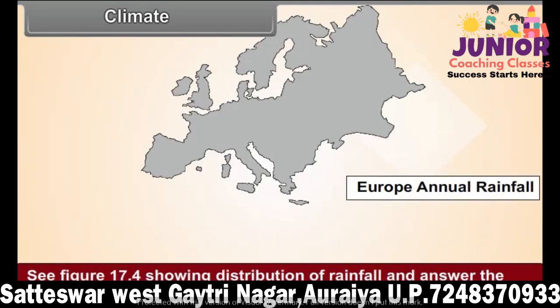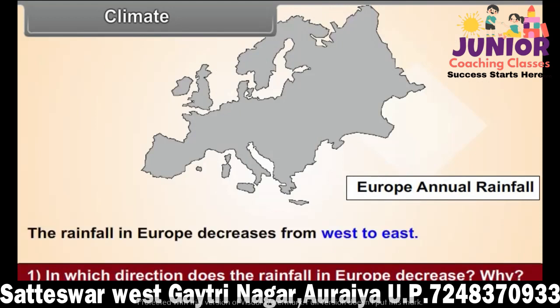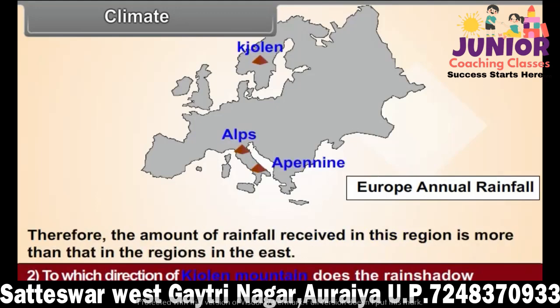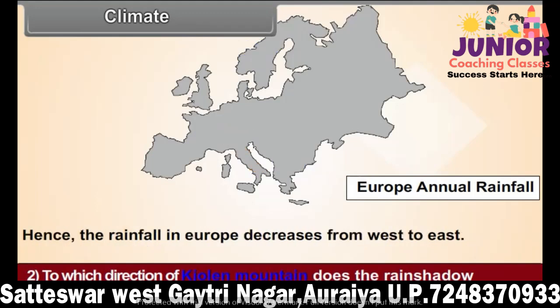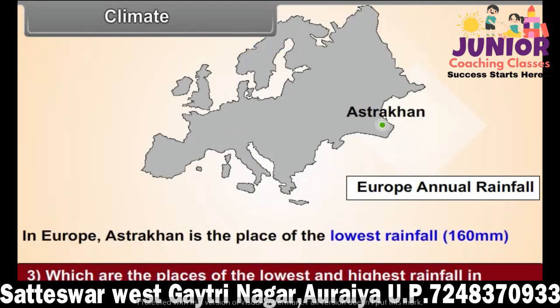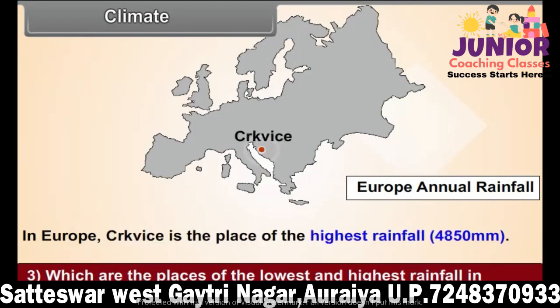See figure 17.4 showing distribution of rainfall and answer the following questions. Question 1: In which direction does the rainfall in Europe decrease and why? Question 2: To which direction of the mountain does the rain shadow area lie? Question 3: Which are the places of the lowest and highest rainfall in Europe?